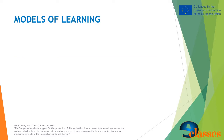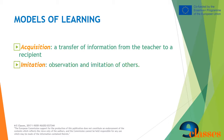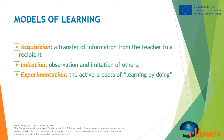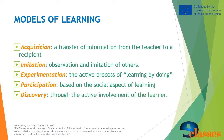Whatever their typology, each educational game must have at least one prevalent model of learning: Acquisition — a transfer of information from the teacher to a recipient; Imitation — observation and imitation of others; Experimentation — the active process of learning by doing; Participation — based on the social aspect of learning; and Discovery — through the active involvement of the learner.